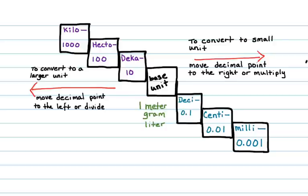If I have one meter, that equals a thousand millimeters. Going down the stairs, converting to a smaller unit, I move the decimal point to the right three places to get a thousand, because I went down three stairs.